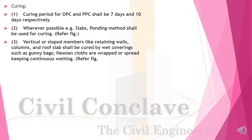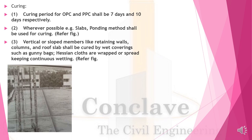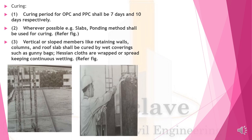Curing: Curing period for OPC and PPC shall be seven and ten days respectively. Wherever possible, the ponding method shall be used for concreting. For vertical or sloped members like retaining members, columns, and roof slabs, hessian cloth curing shall be done. This is what is called pond curing. The methodology of curing columns using hessian cloth cover is also shown.